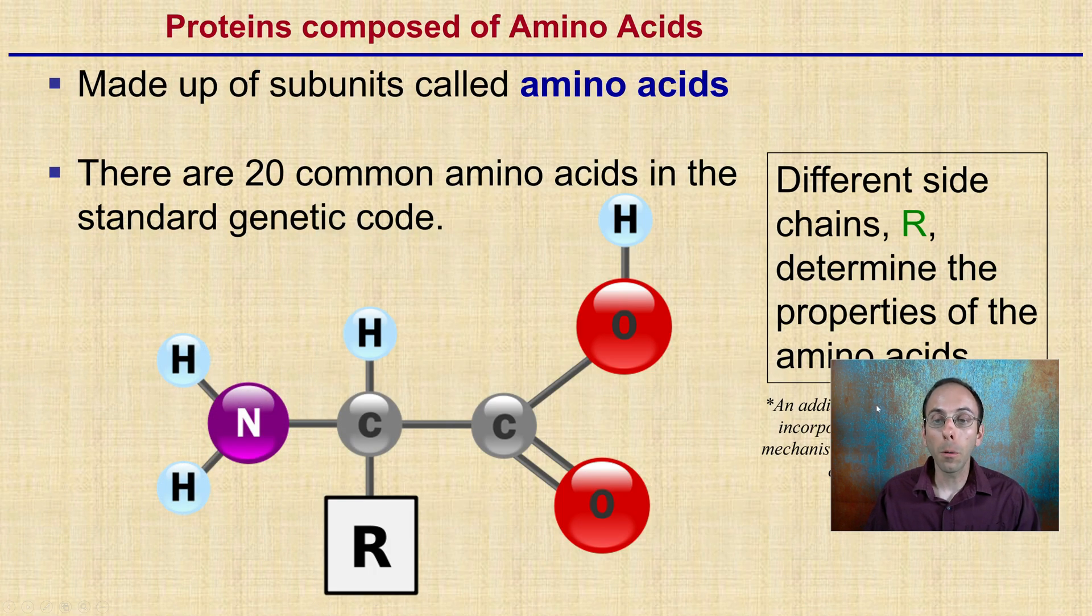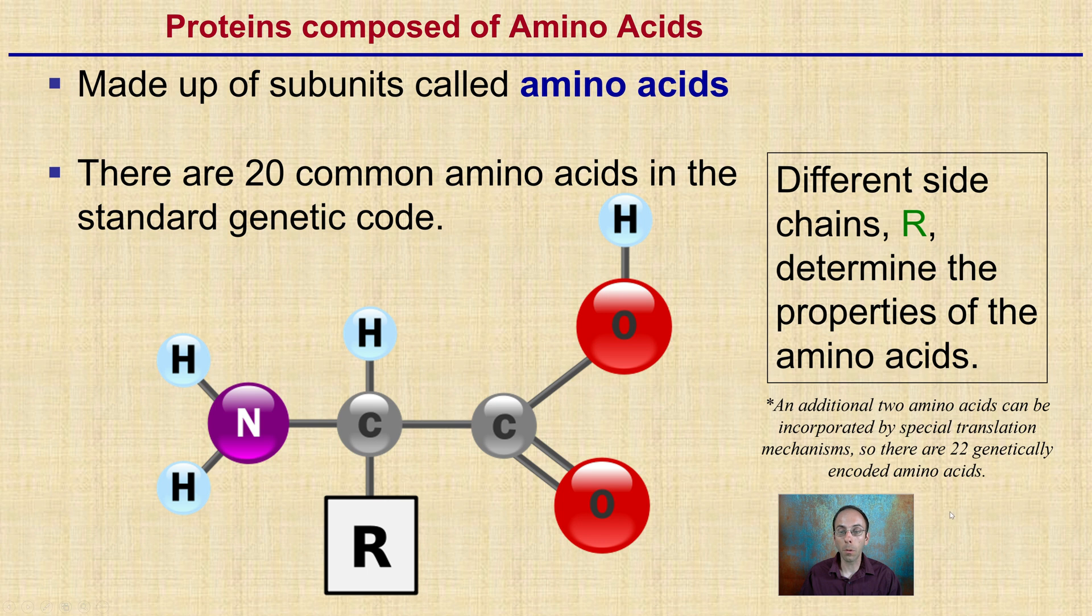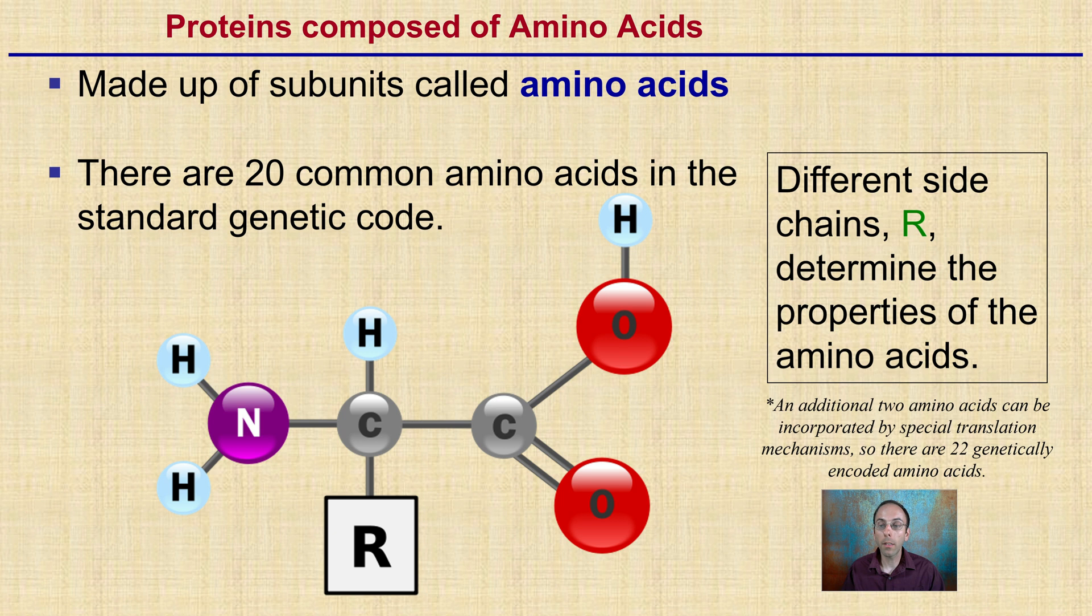So proteins are composed of amino acids. There's different subunits that are linked together that'll ultimately form the protein. So there's 20 common amino acids in the standard genetic code and they all have different side chains or R groups. This is the variant group. That determines the properties of the amino acid and how it will interact. Now an additional two amino acids can be incorporated by special translation mechanisms. So there's 22 genetically encoded amino acids, but 20 are the common.